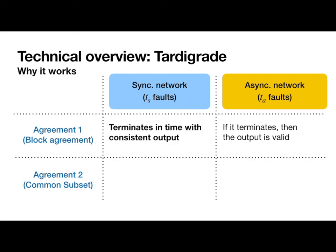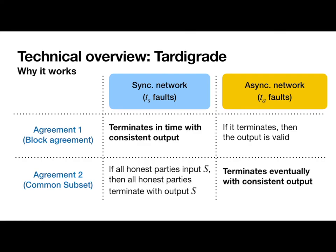The second agreement phase, meanwhile, is similar to a standard asynchronous common subset or ACS sub-protocol. If it's run in a synchronous network with up to TS faults, we only guarantee a weak validity property because that's not really what it's meant to do. But if it's run in an asynchronous network with at most TA faults, we get full security.